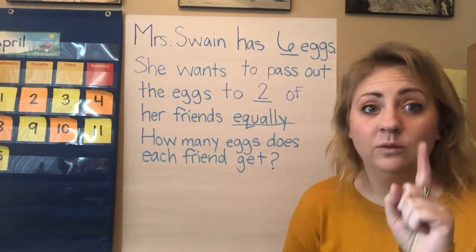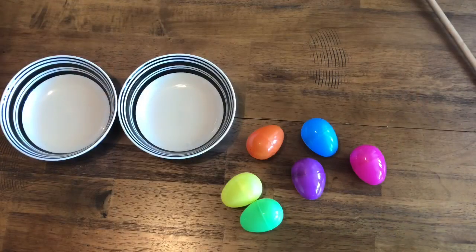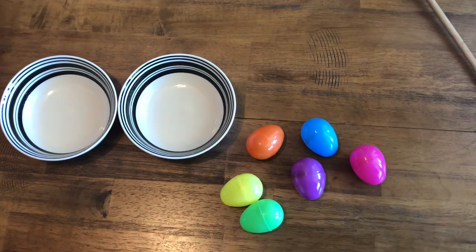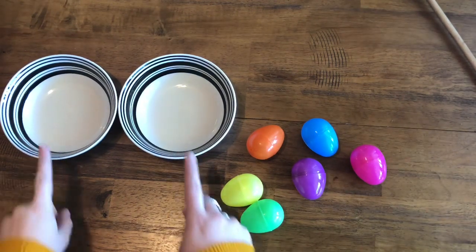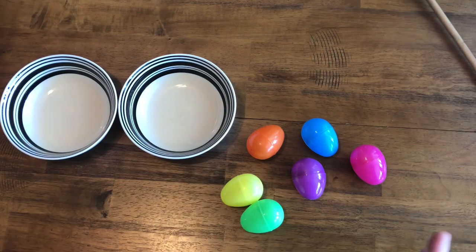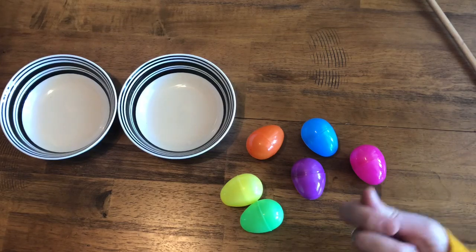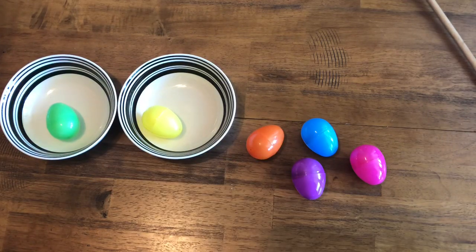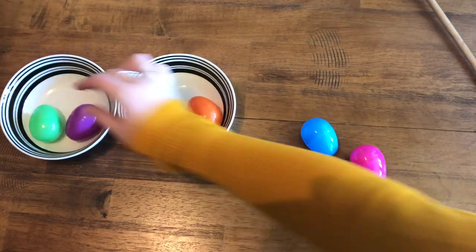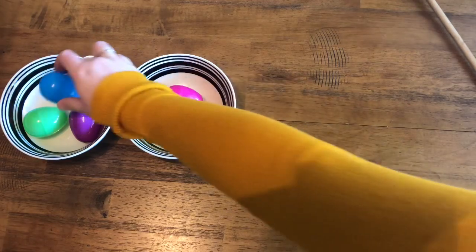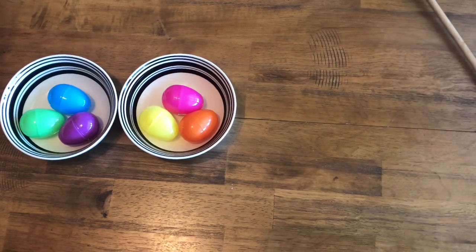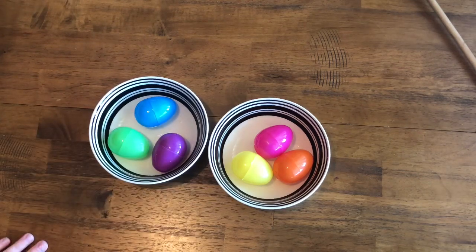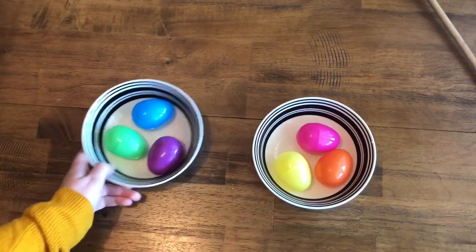We're going to do this one with our manipulatives. We have Mrs. Swain's eggs — one, two, three, four, five, six. We know she has six eggs. These are the bowls for her two friends — one, two bowls for two friends. Now we have to give out the eggs equally, so it has to be fair. If I give one person an egg, I need to make sure the other person has one egg also. Let's keep doing that until we run out of eggs. Now that I'm out of eggs, how many eggs are in each bowl? Each person has one, two, three eggs.